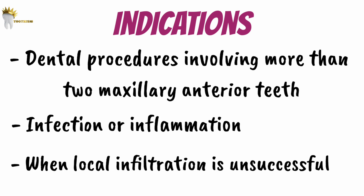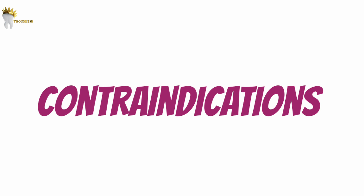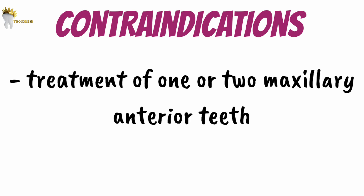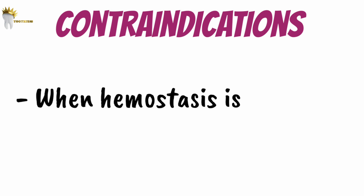Also, sometimes local infiltration doesn't work if the cortical bone is too dense, so when it doesn't work, this block is a great option. This nerve block has some contraindications. When only one or two teeth are to be treated, it's better to give local infiltration for those teeth. Sometimes we require a bloodless field in the area of treatment, so in this case we need local infiltration to achieve hemostasis.